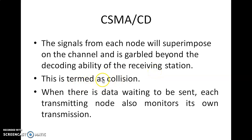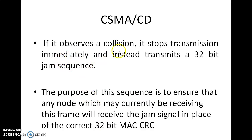This is called a collision — the signals are superimposed and cannot be decoded at the receiving end at all. When there is data waiting to be sent, each transmitting node also monitors its own transmission. If it observes a collision, it stops transmitting immediately and then transmits a 32-bit jammed sequence.